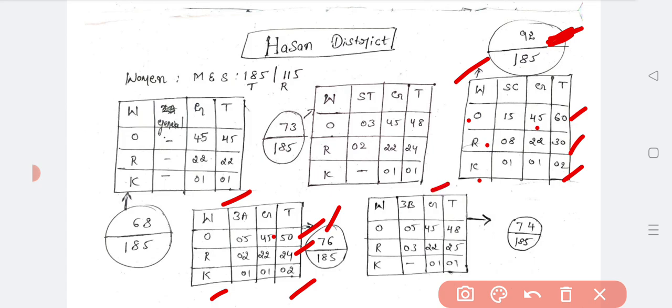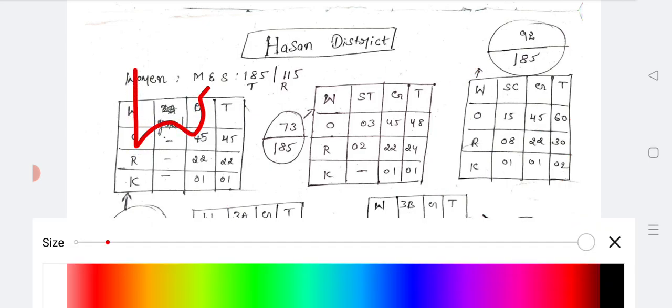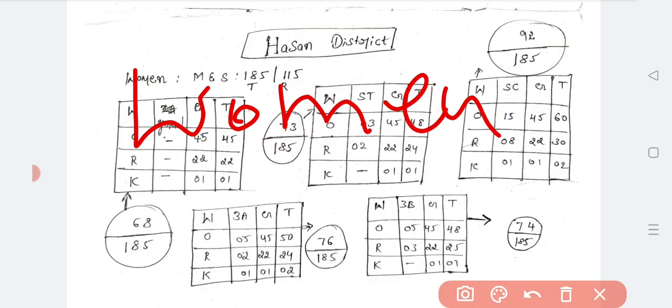3B last one: women only 5, 3B general 45, total 48. Rural 25, 3 plus 22. Kannada medium 1 plus 1. So totally 74 seats are reserved for 3B Kannada medium rural women. This is to explain especially for women category. Men's category is exactly half.